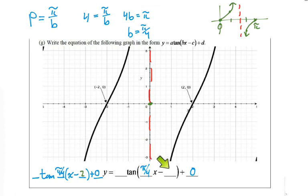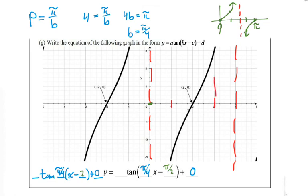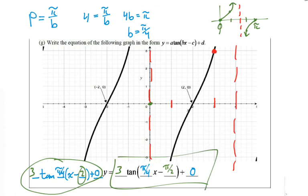So pi over four times two gives us pi over two. Now for the satellite points — if one asymptote is at zero and the other is at four, our satellite points are at one and three. Looking at the graph, the point goes up to three, so a equals three. We write three right here in our equation. That's all your answers for that problem.